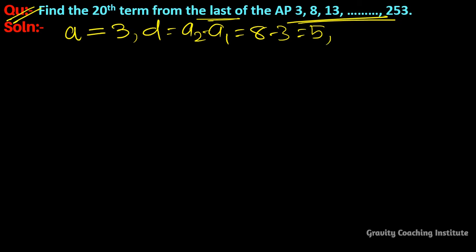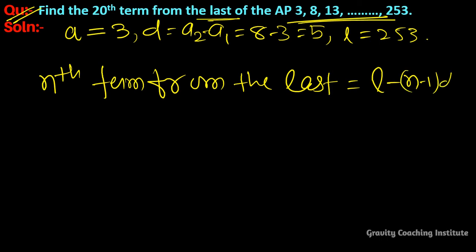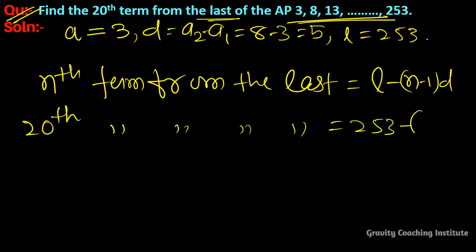The last term is 253. The nth term from the last is equal to l minus (n minus 1) into d. So the 20th term from the last of the given AP is equal to 253 minus (20 minus 1) into 5.